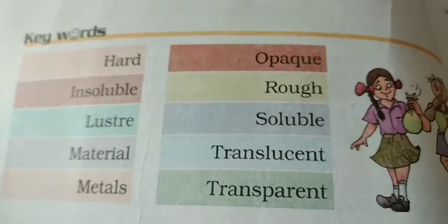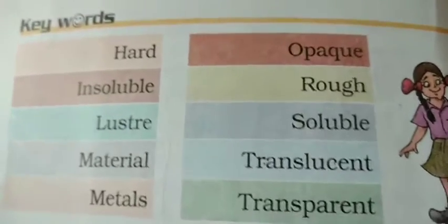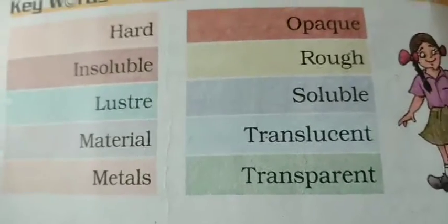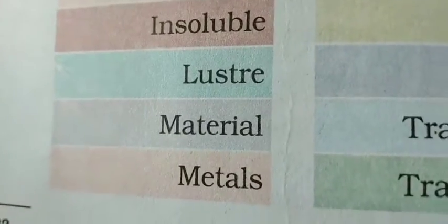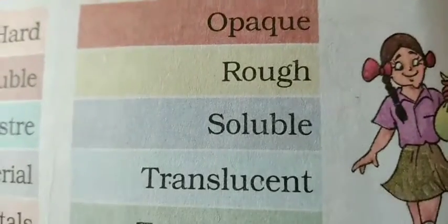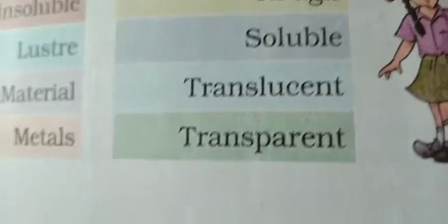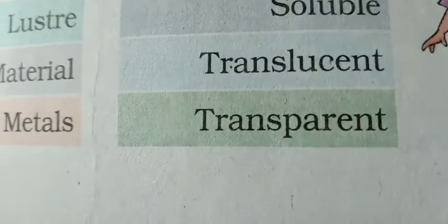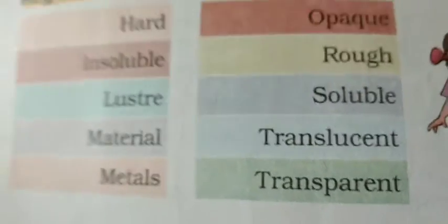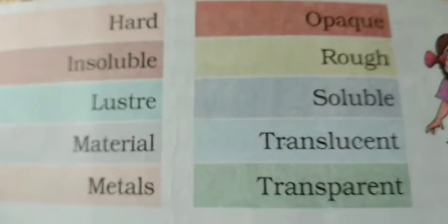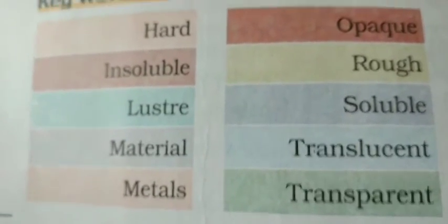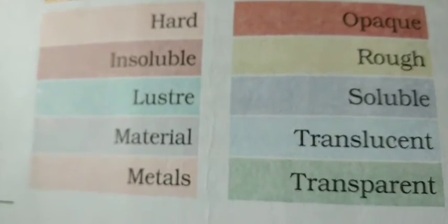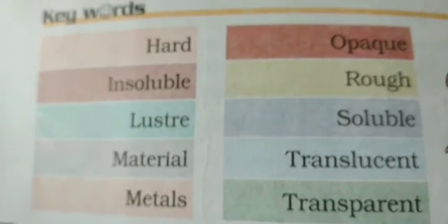Let us see the keywords of this chapter: hard, insoluble, lustre, material, metals, opaque, rough, soluble, translucent, transparent. At the end of the chapter, we have come across these keywords. Our next video is going to be about the fifth chapter.